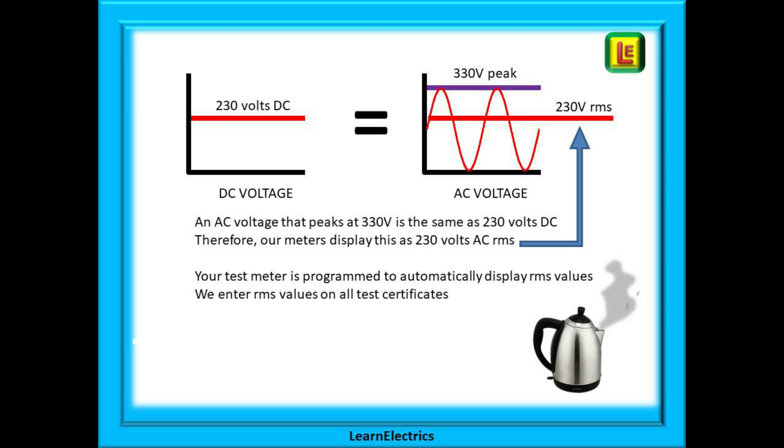An AC voltage, however, is going up and down, sometimes at a maximum, giving maximum heat, and sometimes at zero volts, giving no heat, and most of the time somewhere in between. So how big does the maximum AC voltage need to be to compensate for the times that it is less than 230 volts, or even at zero? It has been shown that an AC voltage that peaks at 330 volts is the same as 230 volts DC.